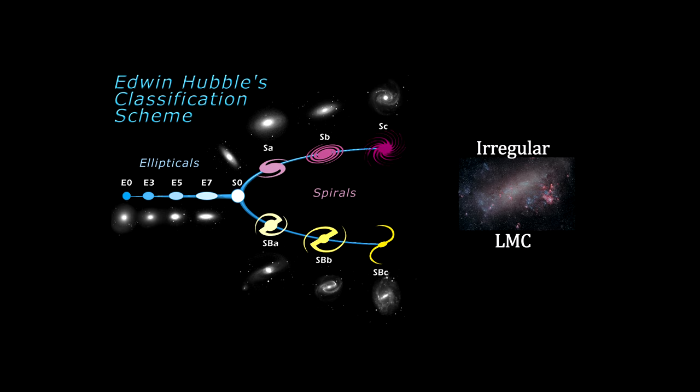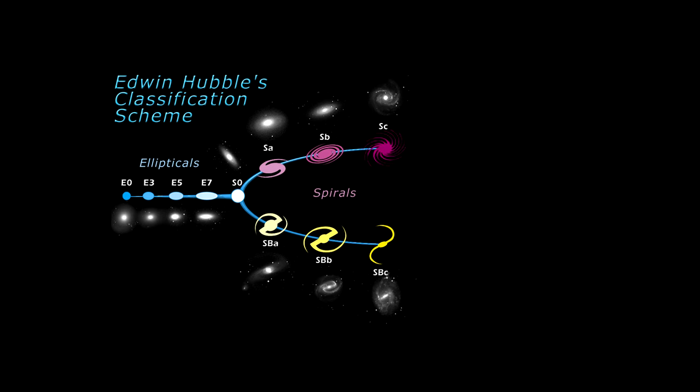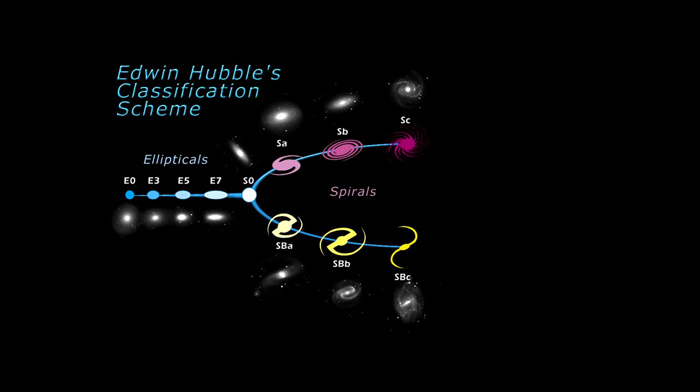Since Hubble, others have added characteristics such as bars, rings, and spiral arm characteristics.